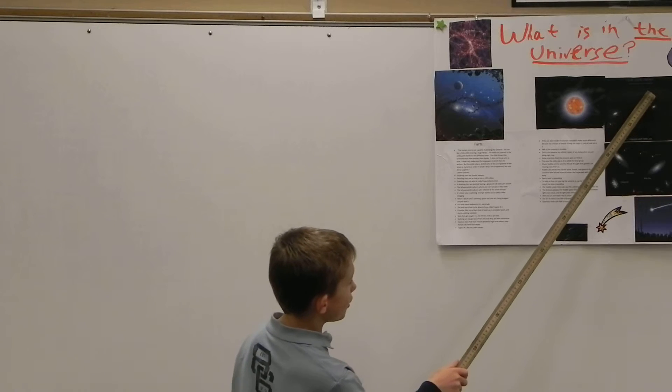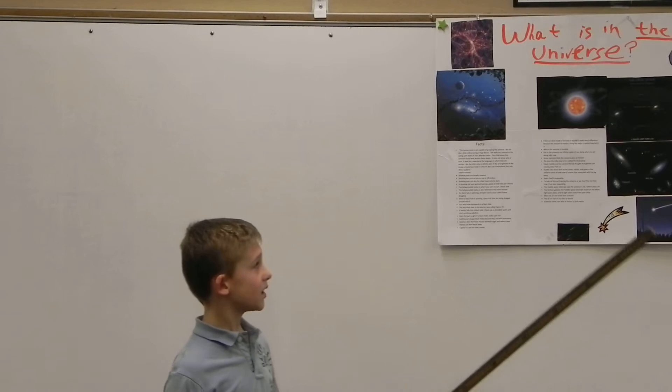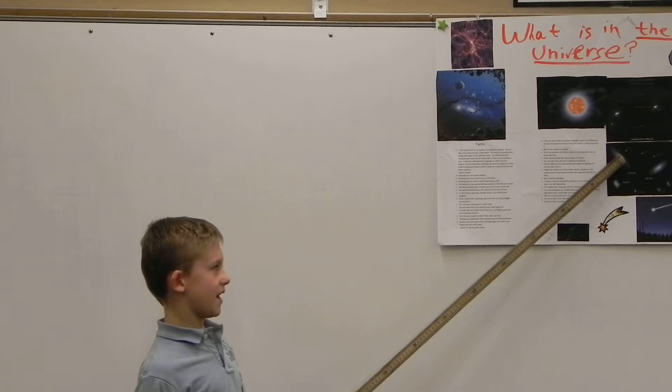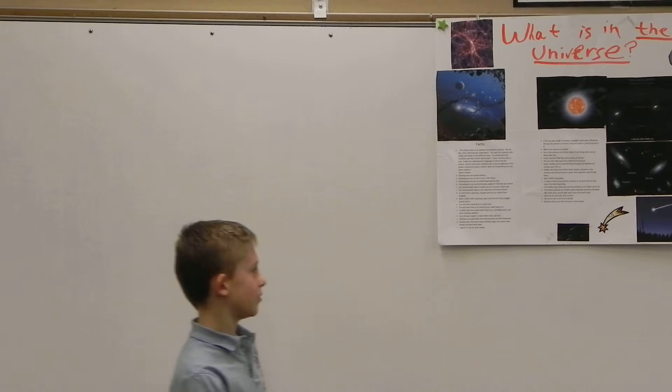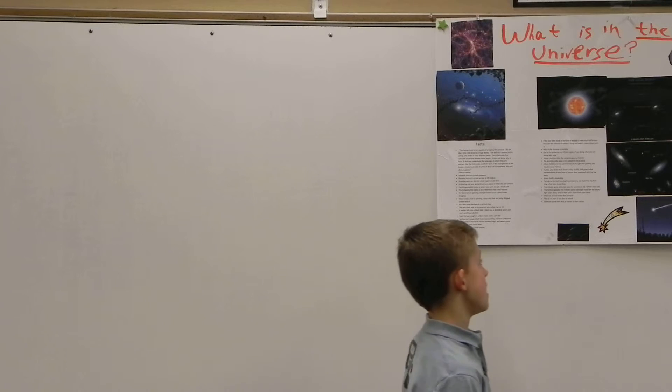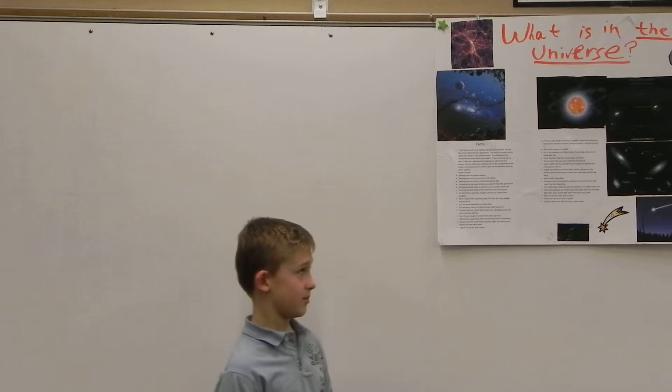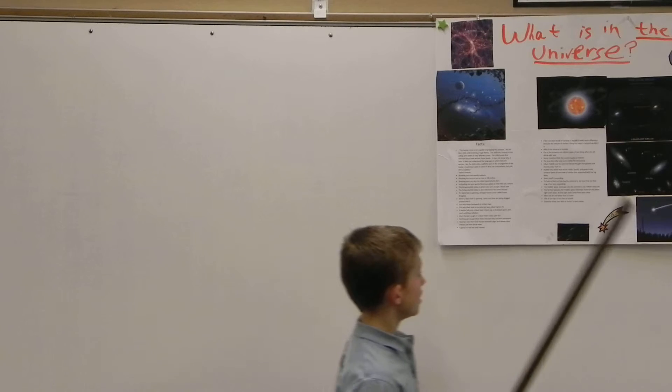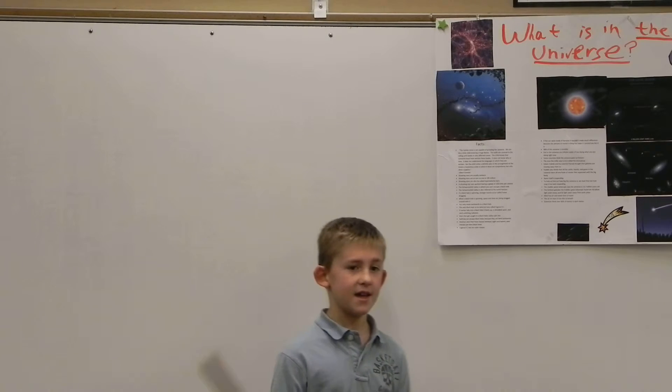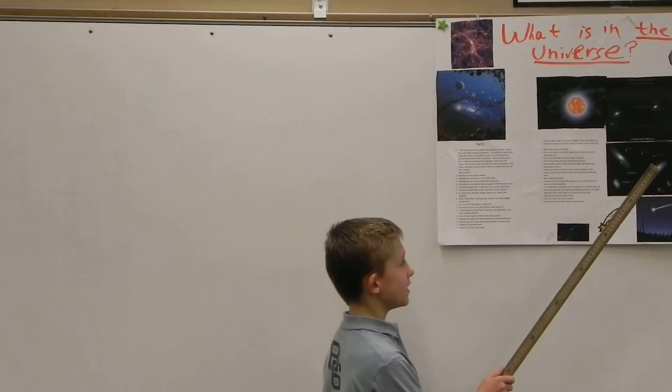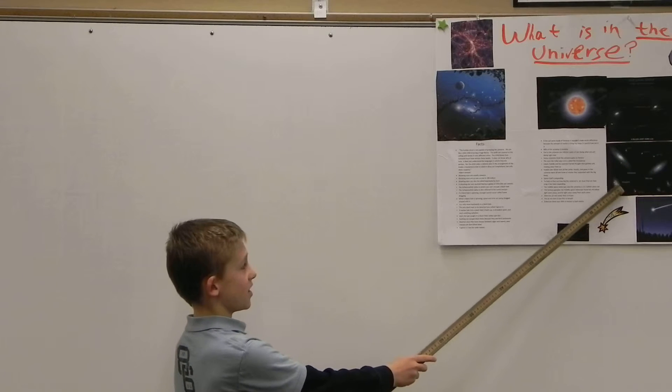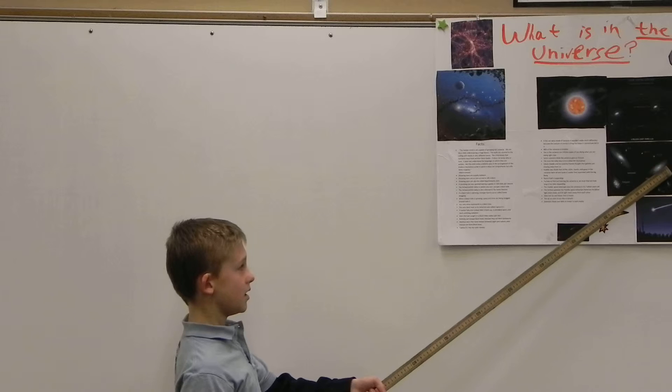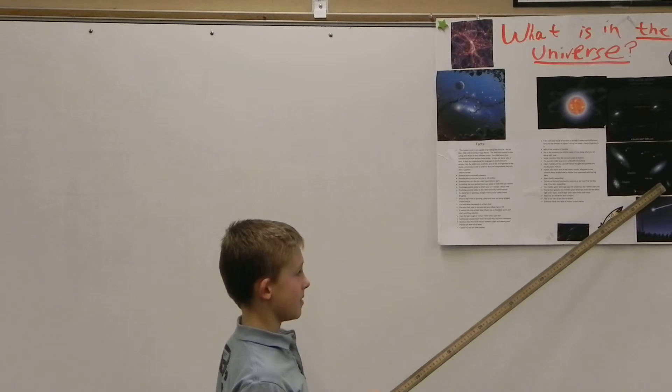Our local group contains more than 30 galaxies. There are three actually named galaxies, including the Milky Way. The other two are Andromeda and Triangulum. There's Andromeda and that is Triangulum. That's the Milky Way, and the others are just small to the Milky Way.